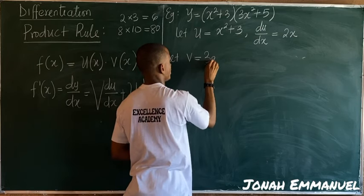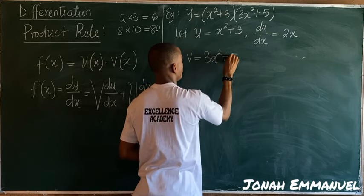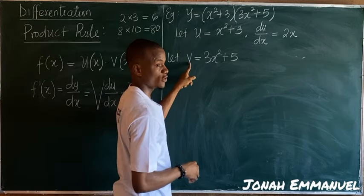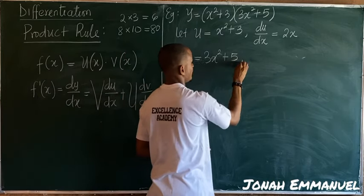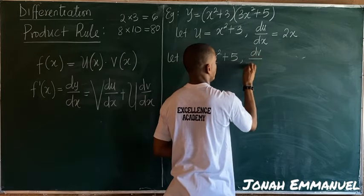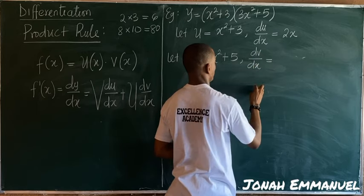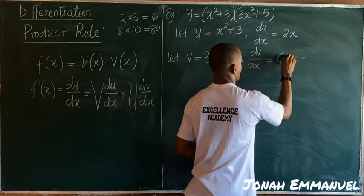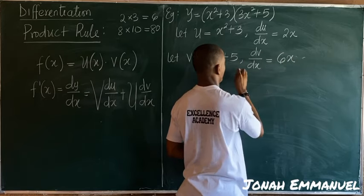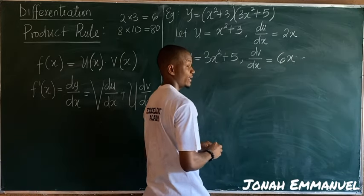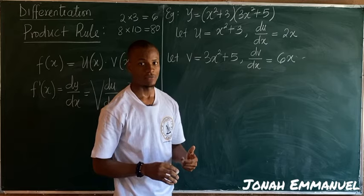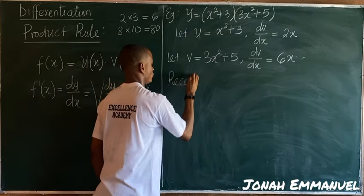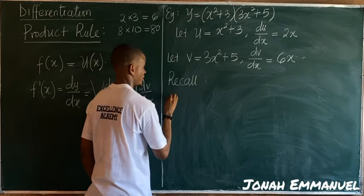Next, let v be equal to the next term, which is 3x² + 5. Differentiate v with respect to x, so dv/dx equals 6x — the constant 5 differentiates to zero and drops off.